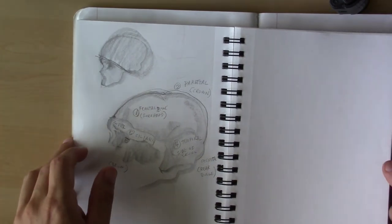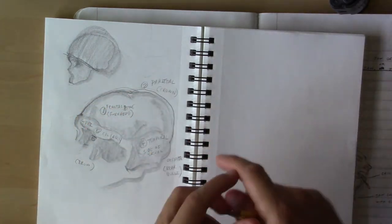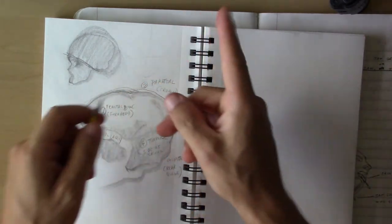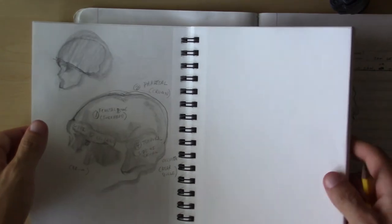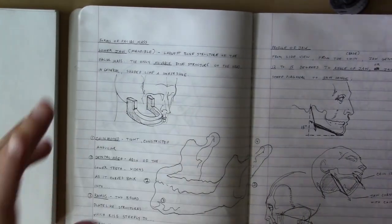Today, we are going to start breaking down the facial mass. The facial mass has ten major structures that we're going to talk about. Today, we're only going to talk about one of them. We're going to talk about the lower jaw.